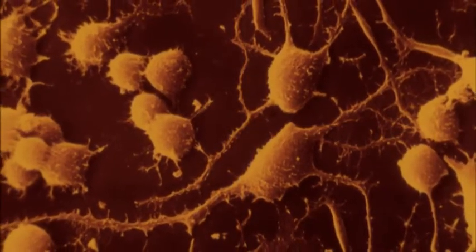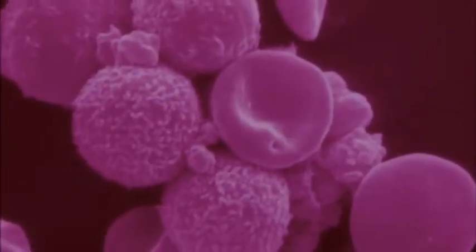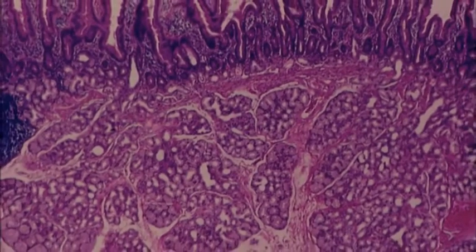Nerve cells, blood cells, cells lining your intestine. They all look different, and they do different jobs.